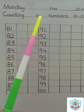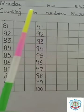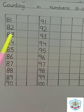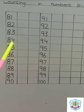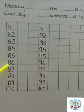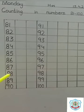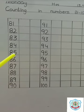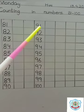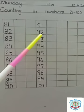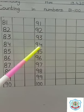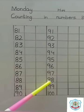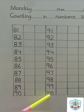Now read with me counting in numbers 81, 82, 83, 84, 85, 86, 87, 88, 89, 90. The next one is 91, 92, 93, 94, 95, 96, 97, 98, 99, and 100.